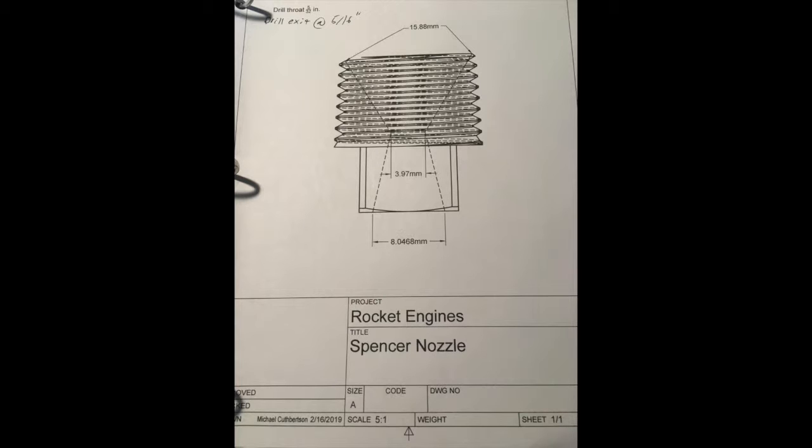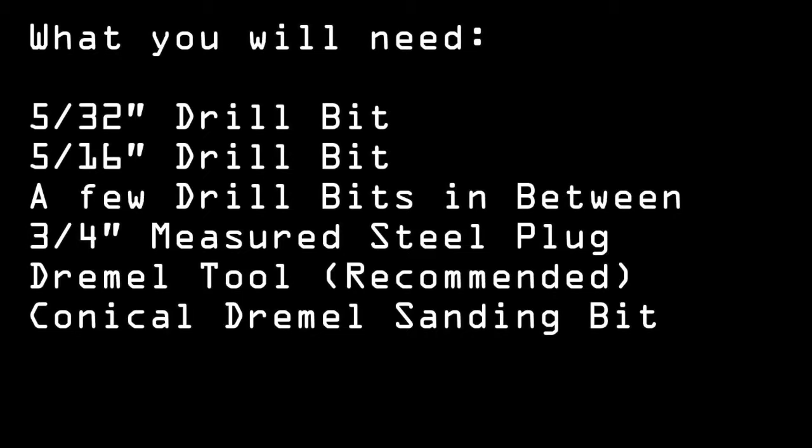Today I'm going to show you how to make a solid rocket nozzle. What you're going to need is a 5/32 inch drill bit, a 5/16 inch drill bit, and a few drill bits in between.